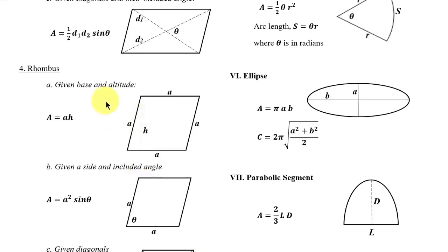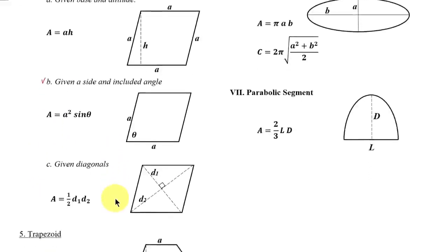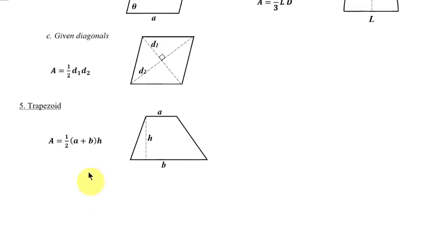Number four is the rhombus. Given base and altitude: Area = a × h. Given a side and included angle: Area = a² × sin(θ). Given diagonals — note that a rhombus has perpendicular diagonals — the formula is: Area = ½ × d₁ × d₂.